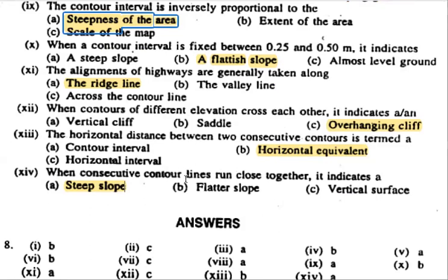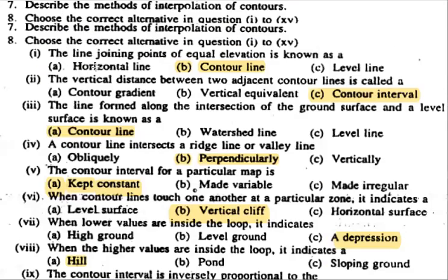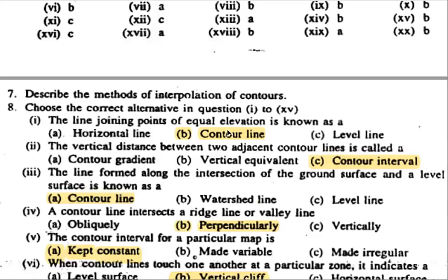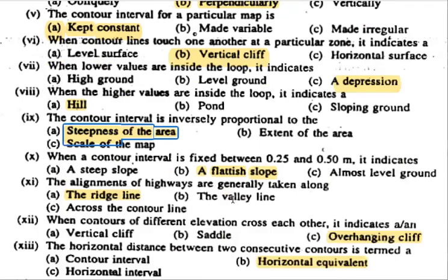Next question: When consecutive contour lines run close together, it indicates a steep slope. To summarize: a contour line is an imaginary line of equal elevation; the contour interval is the vertical distance between two contours; and the horizontal equivalent is the horizontal distance between them.